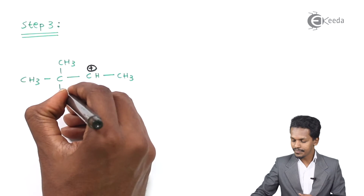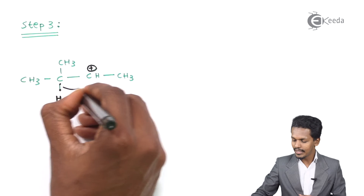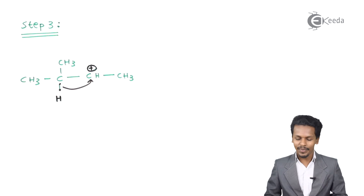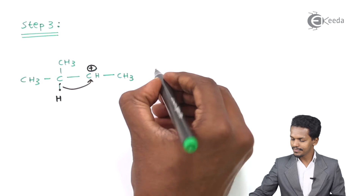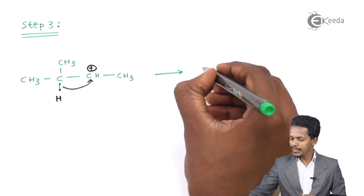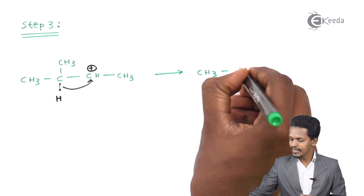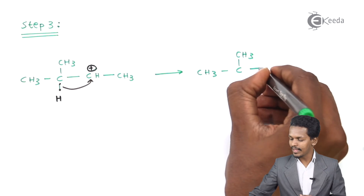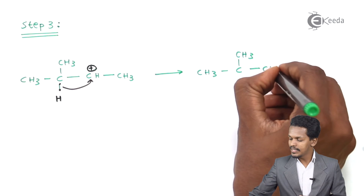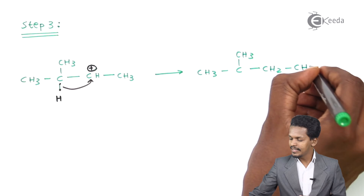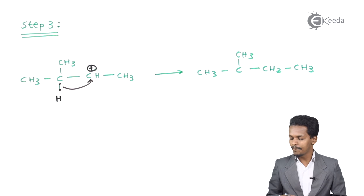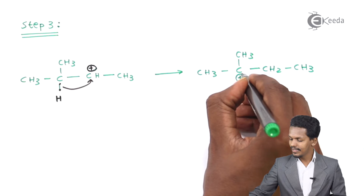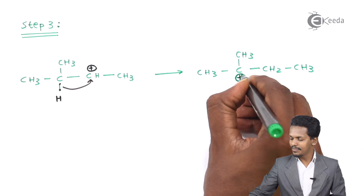Therefore, a hydrogen atom will transfer toward the adjacent carbon atom — a hydride shift — so that the product obtained is CH3-CH2-C+(CH3)-CH3. Now this carbon atom has been turned into a tertiary carbocation, which is more stable.